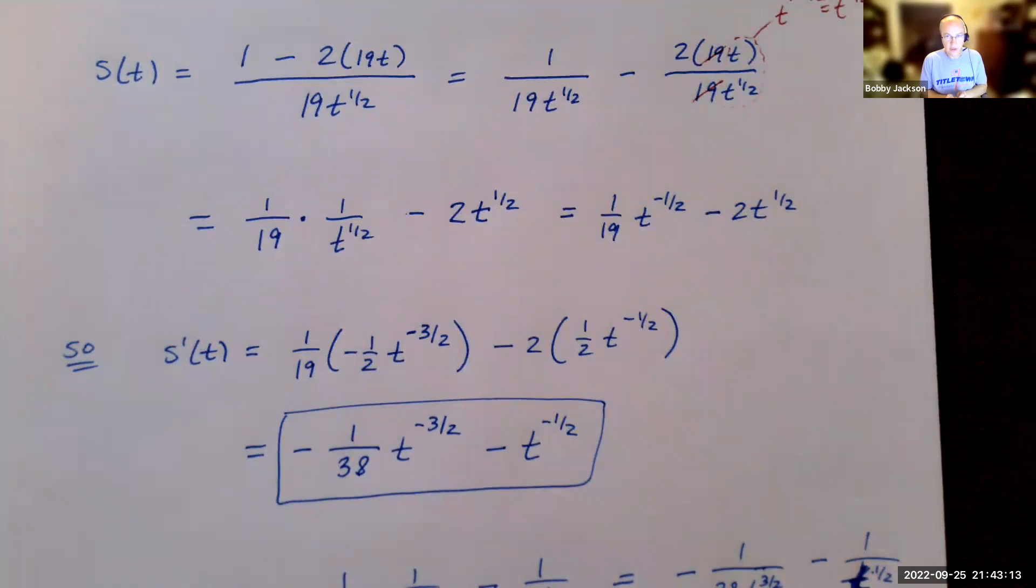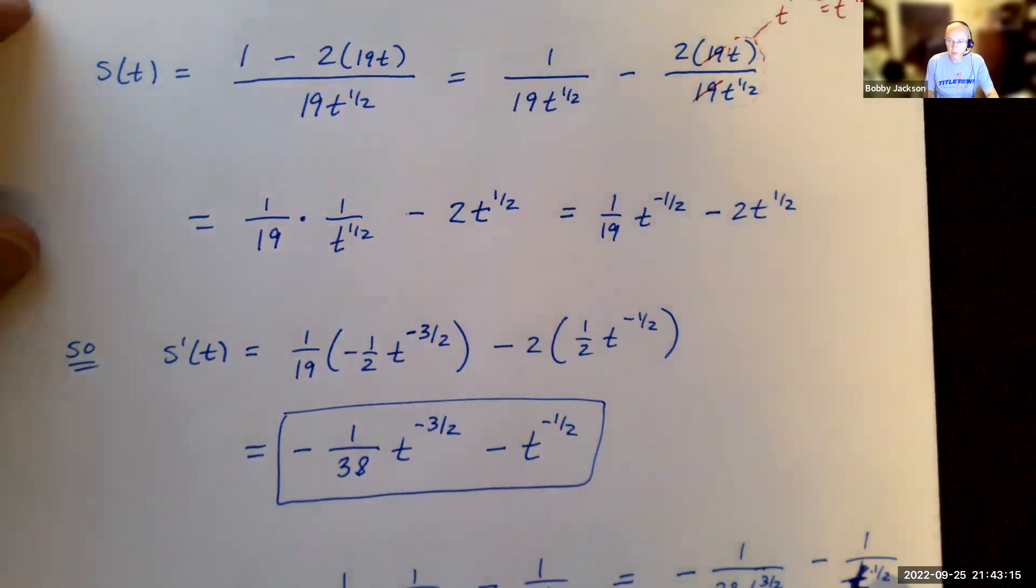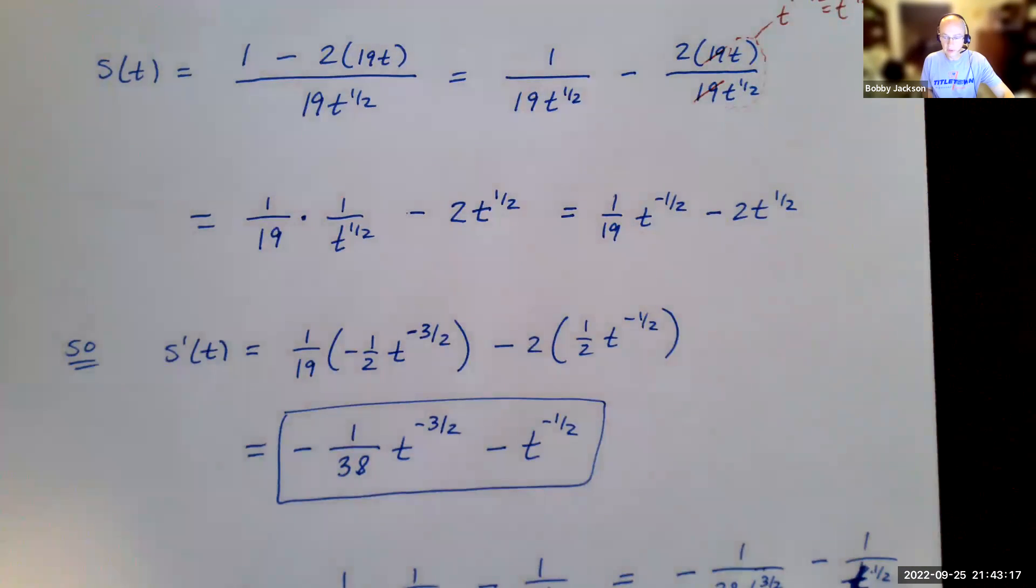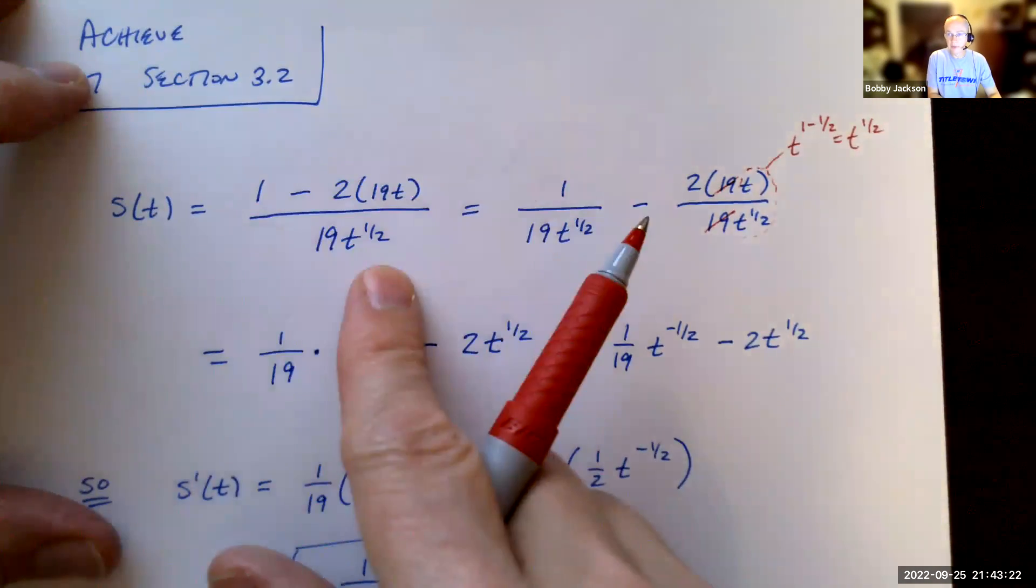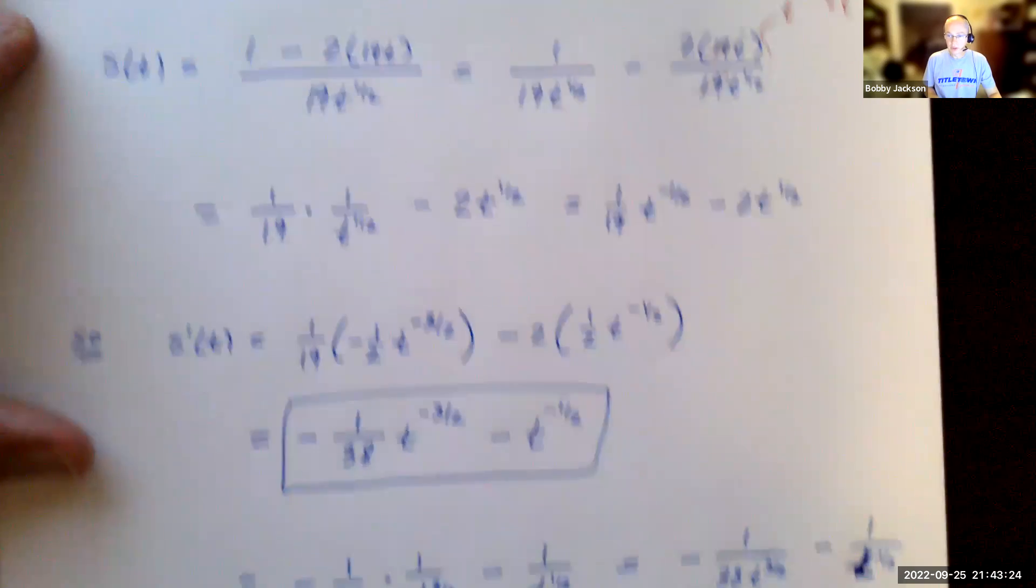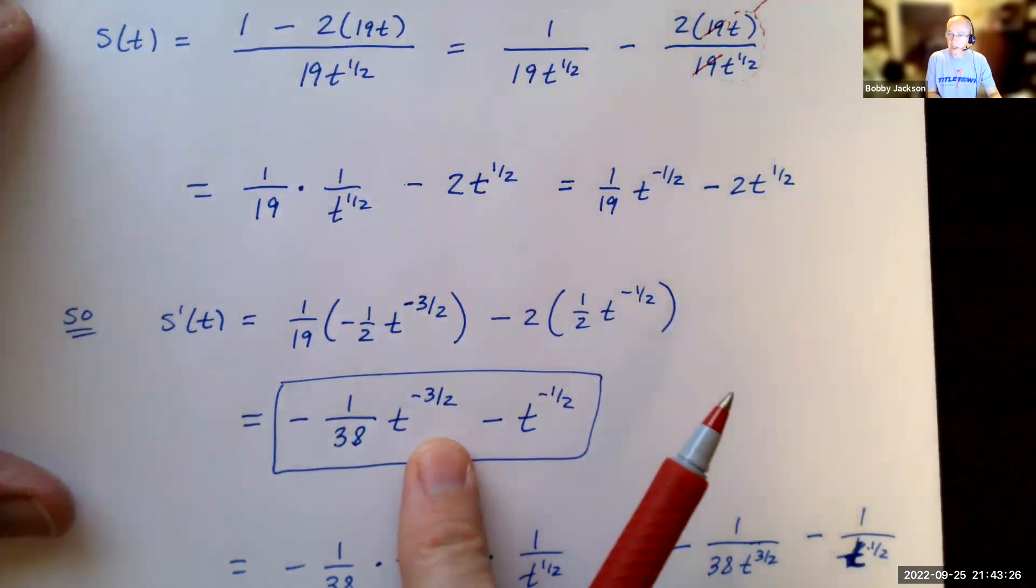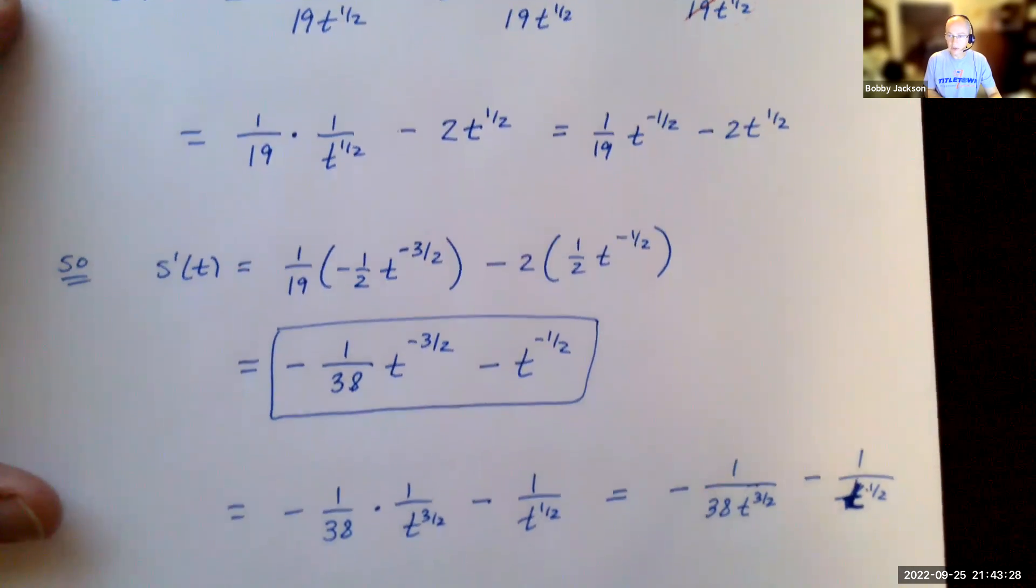I think Achieve will accept an answer like this with negative exponents. A lot of times I do ask to express your final derivative without any negative exponents. Notice the original problem didn't have any negative exponents. Could you express this without negative exponents? I expect that you can.